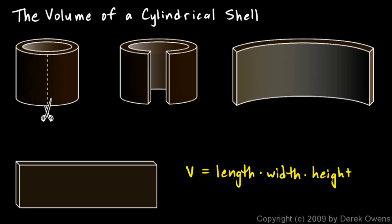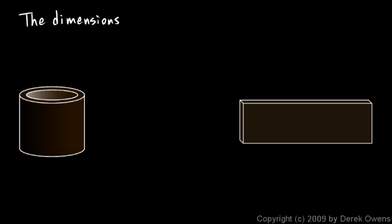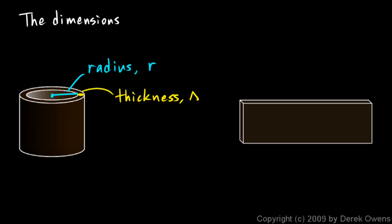Thinking of the shell as something that can be unrolled into a rectangular slab is the key to finding a volume formula. The key dimensions of the cylindrical shell are: a radius r, a thickness which we call delta r — the change in r as we go from the center toward the edge through the shell — and then a height h.